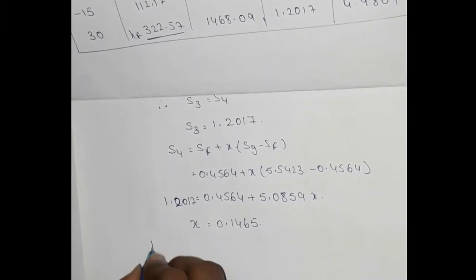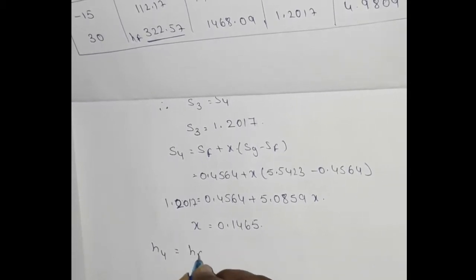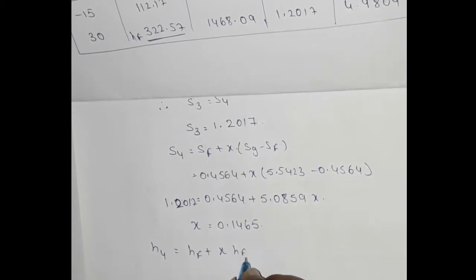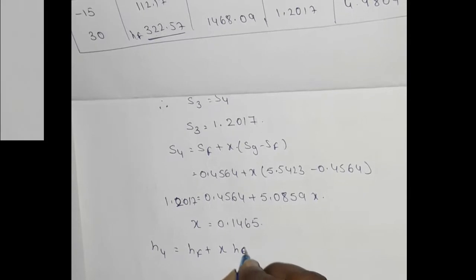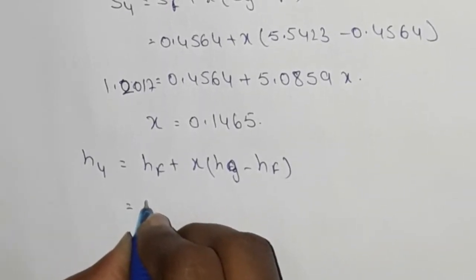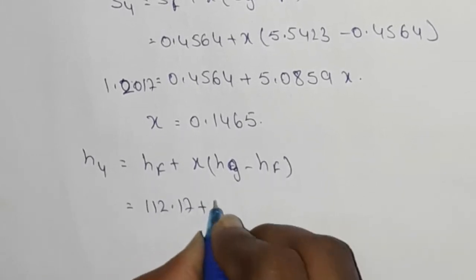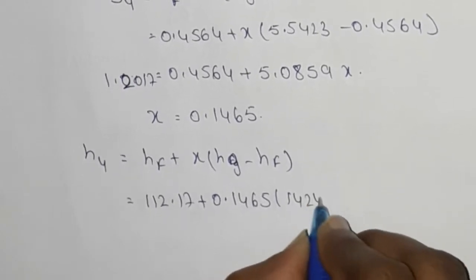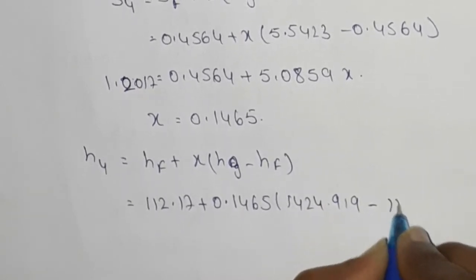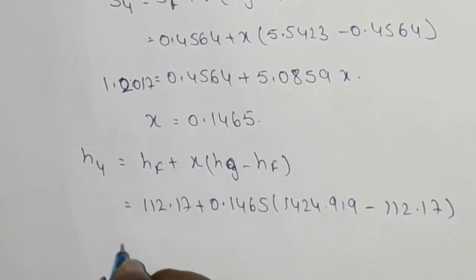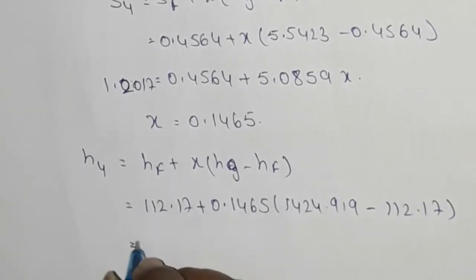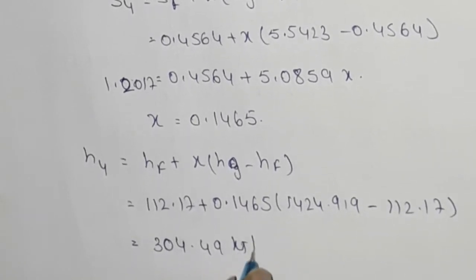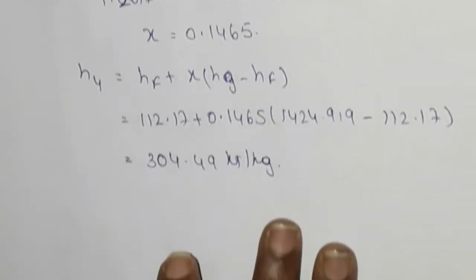Next, find H4. H4 formula is Hf plus x into (Hg minus Hf). At minus 15°C: Hf equals 112.17, x equals 0.1465, Hg equals 1424.91. So H4 equals 112.17 plus 0.1465 into (1424.91 minus 112.17). Simplified, H4 equals 304.49 kilojoules per kg.